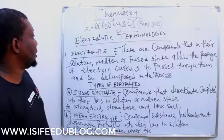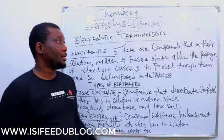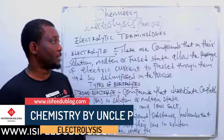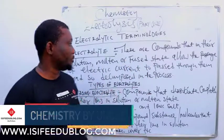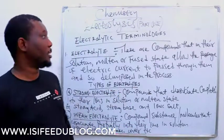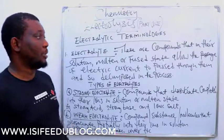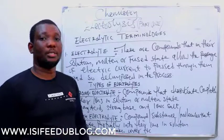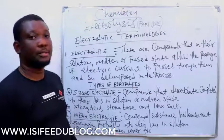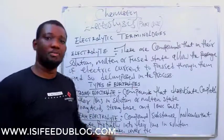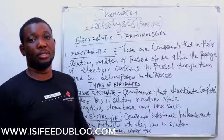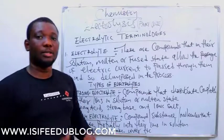Electrolytes are compounds that, in solution, molten, or fused states, allow the passage of electric currents through them and decompose during the process. Any compound in solution that allows currents to pass through it will, in that same process, decompose. Such compounds are electrolytes. Examples can be ionic salts, bases, or acids.